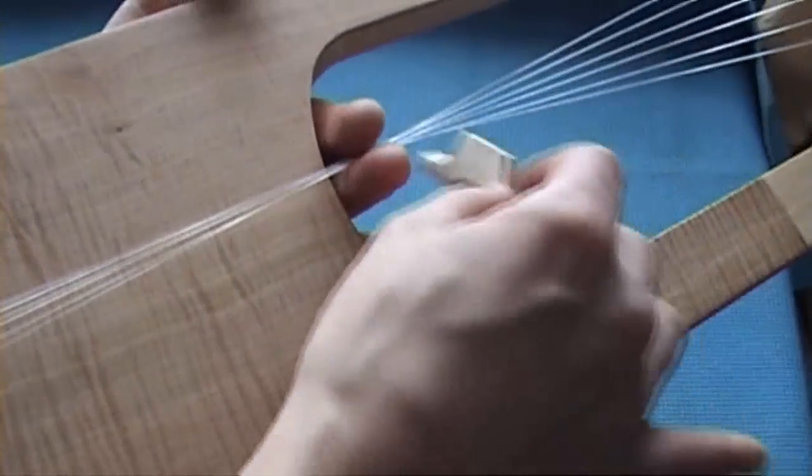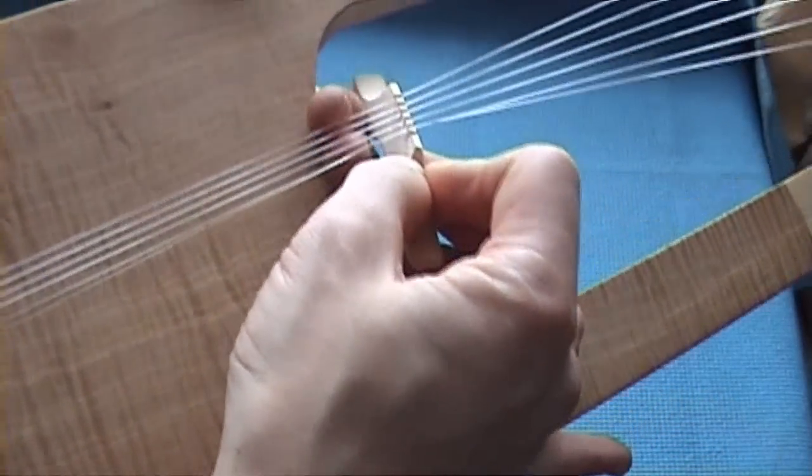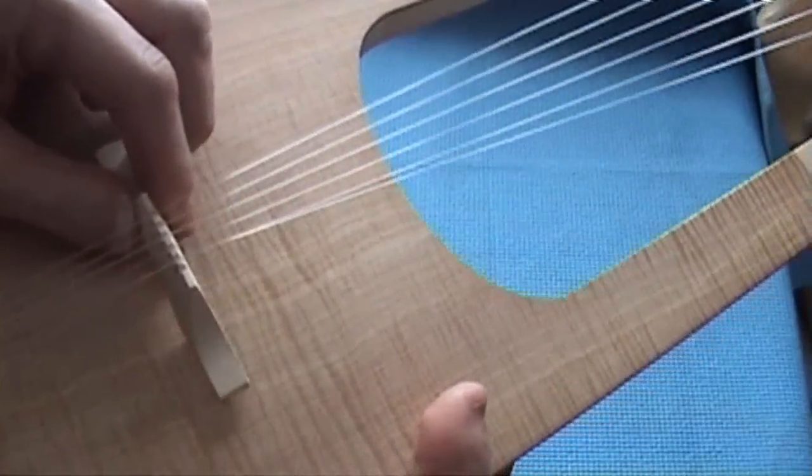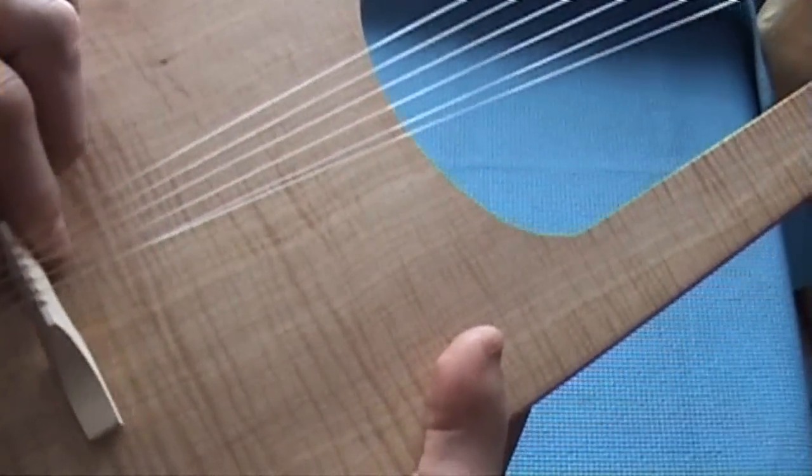Take the bridge and you insert it under the strings, and then you put it in here, and then you pull it without touching the soundboard until you get to the center.